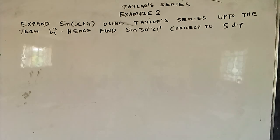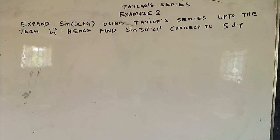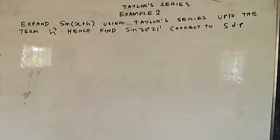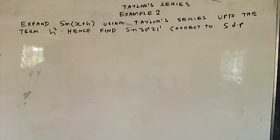Example number 2: expand sine x plus h using Taylor series up to the term h cubed, hence find sine 30 degrees 21 minutes, correct to 5 decimal places.